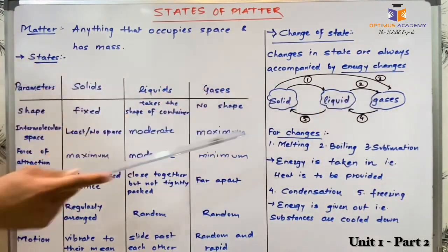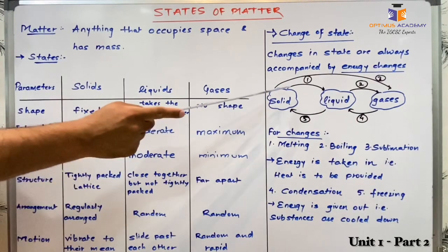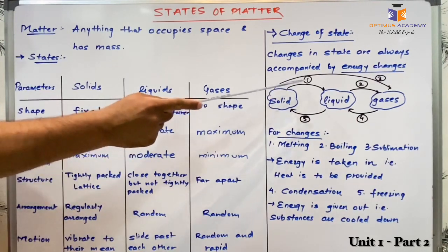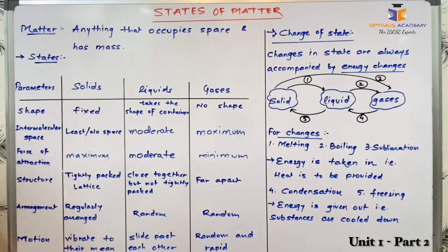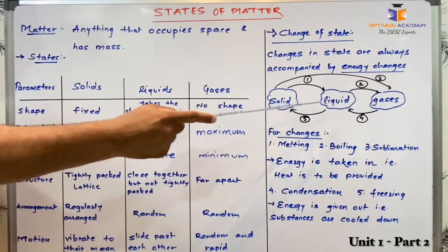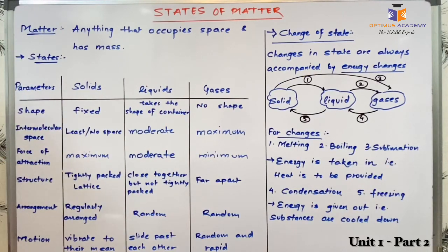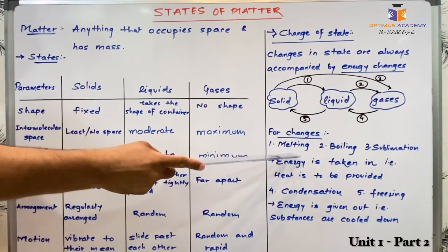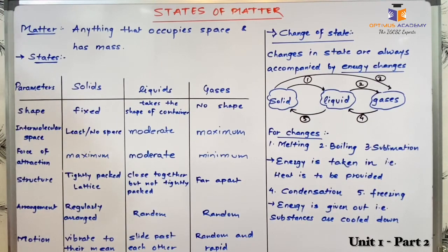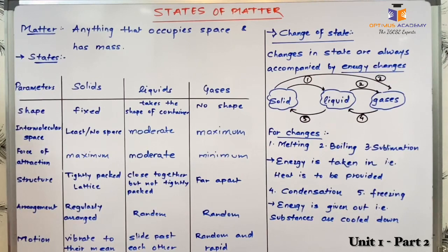I have drawn a diagram over here to understand the changes in states. Solid, liquid, and gases are the three states and we have numbered the changes with one to five. The first is solid to liquid, that is numbered as one. One is called melting — so change of solid state to liquid state is known as melting.